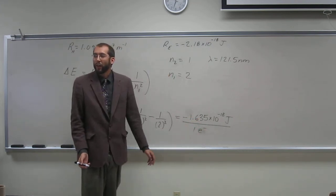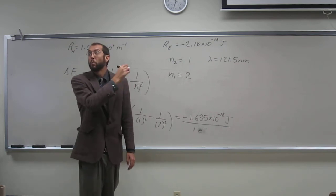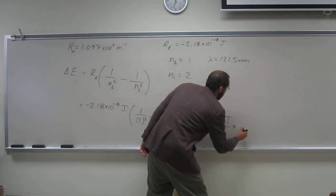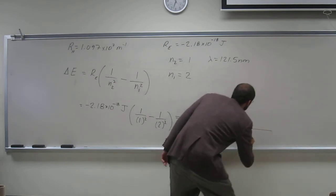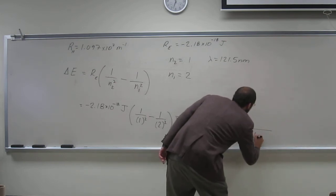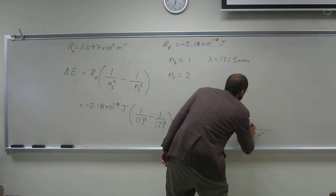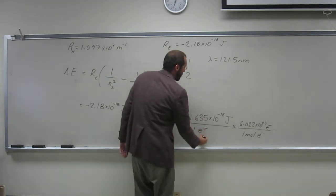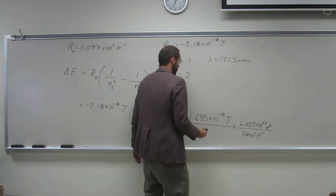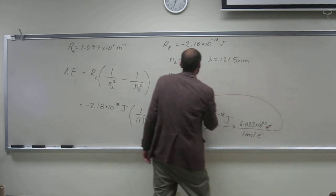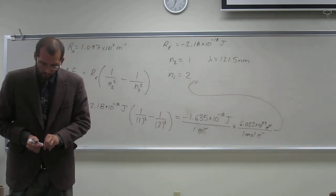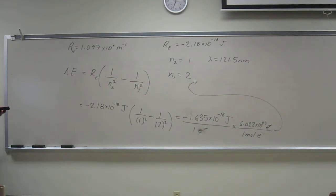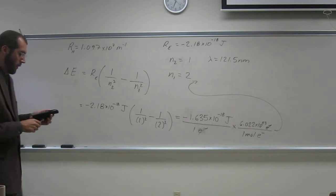We'll multiply it by Avogadro's number and figure out what the per moles of electrons is. So, for every one mole of electrons, we've got 6.022 times 10 to the 23rd electron. Cancel... cancel... Okay.